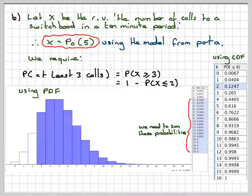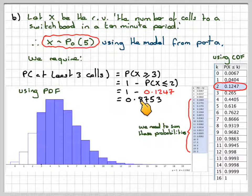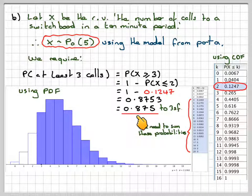If we're going to use the CDF, then we just need to do 1 minus that value. So it's going to be 1 minus 0.1247. And that is going to give me 0.8753. And rounded to three significant figures, that's going to give me 0.875.